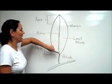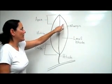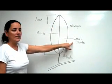The sides of the leaf blade are the margin and the leafy material on either side of that midrib is the leaf blade.